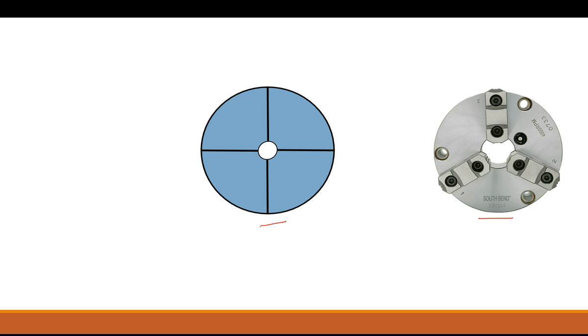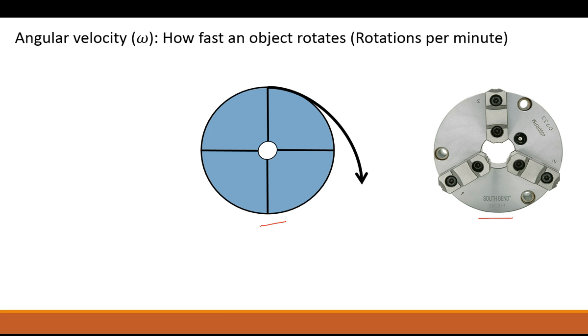Now whenever you have something in rotation you have two velocities that you want to be concerned with. The first that we're going to look at is angular velocity and that is typically represented by the Greek symbol omega. It's just how fast an object rotates and that's measured in rotations per minute or revolutions per minute. You'll see this a lot - your spindle speed is represented on the controller or the headstock of your lathe in RPMs.